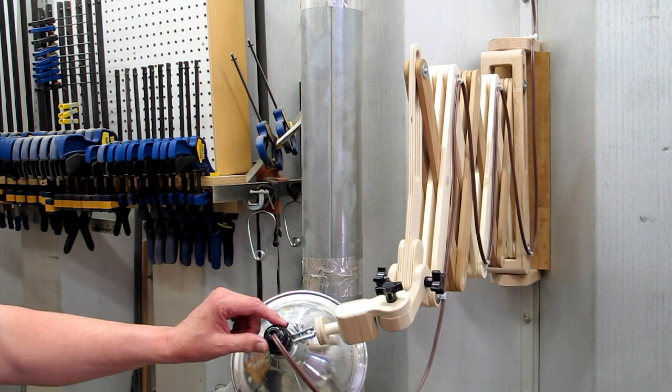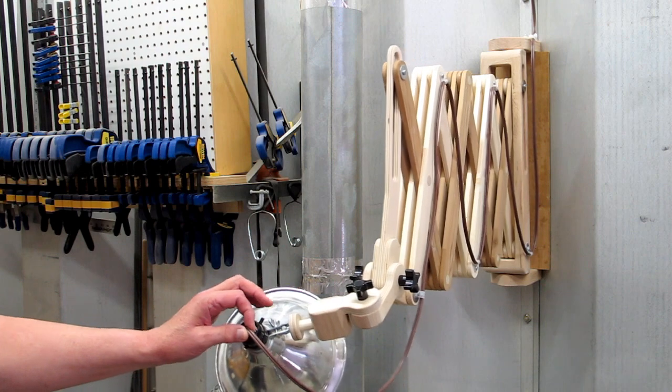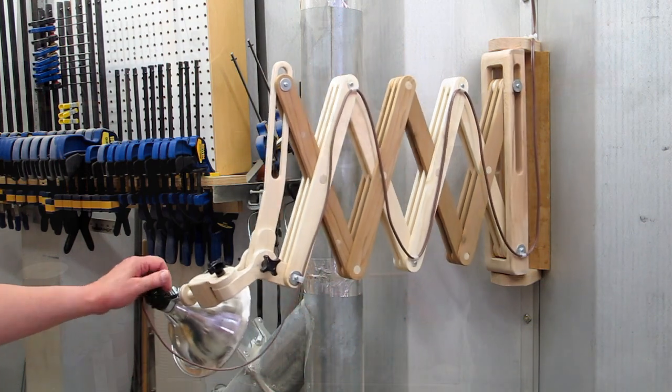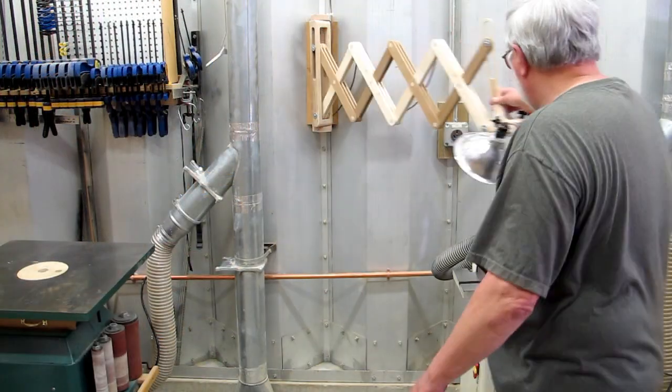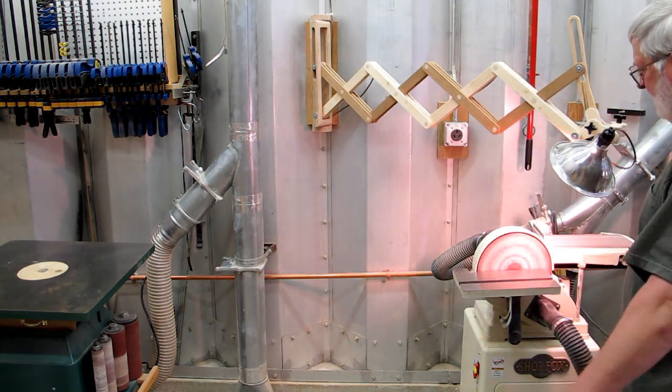I took the original light and put an extra long piece of wire to extend it to the nearest outlet. If you need a light, you just pull it over to the disc sander, turn it on.